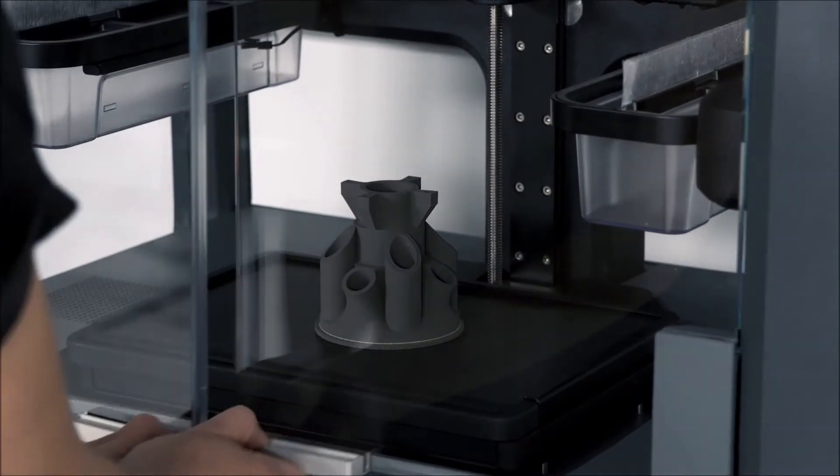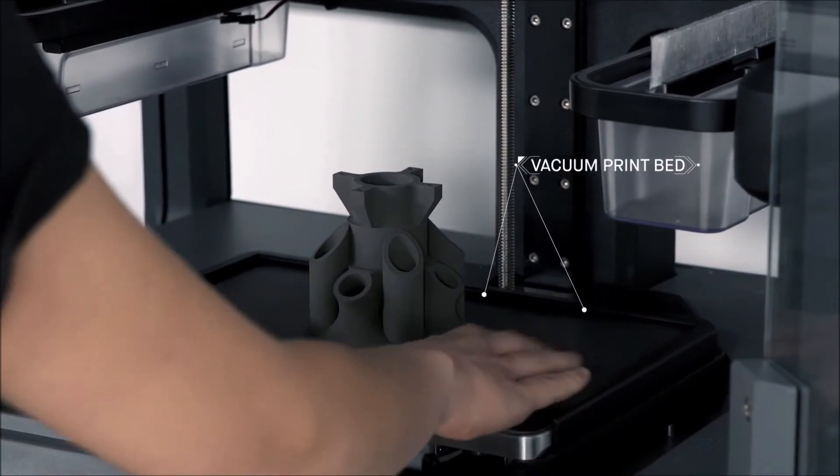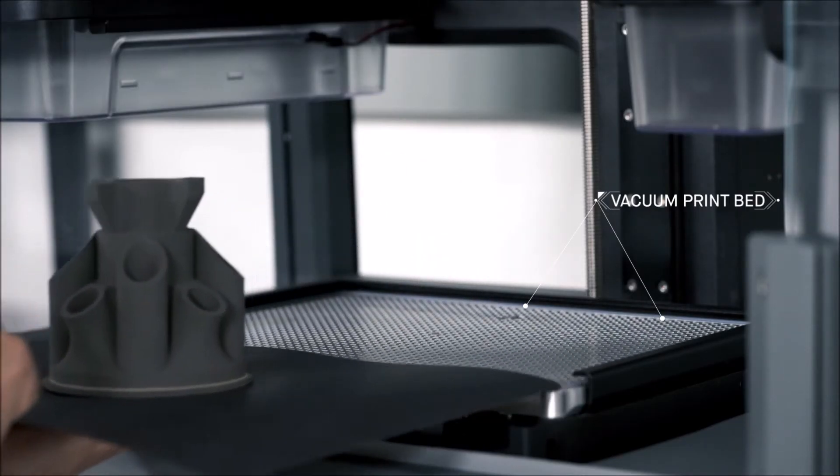During the print, a removable print sheet is held in place by the vacuum bed beneath it, providing a smooth, secure platform.